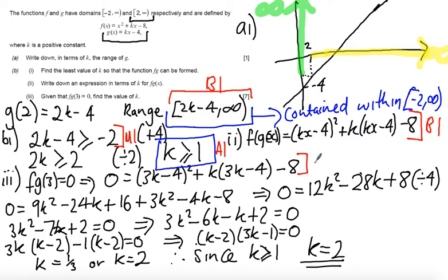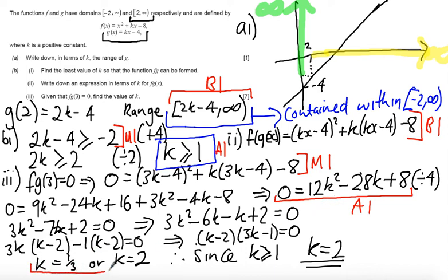Finally, working through part 3: if you've substituted x equals 3 into the expression, you get a method mark. If you get down to 12k squared minus 28k plus 8 equals 0 or equivalently 3k squared minus 7k plus 2 equals 0, you can have an answer mark. Then if you've factorised and reached the solutions k equals one third or k equals 2, you get an answer mark. And if you state explicitly that k equals 2 as the single valid answer, you get a final answer mark.